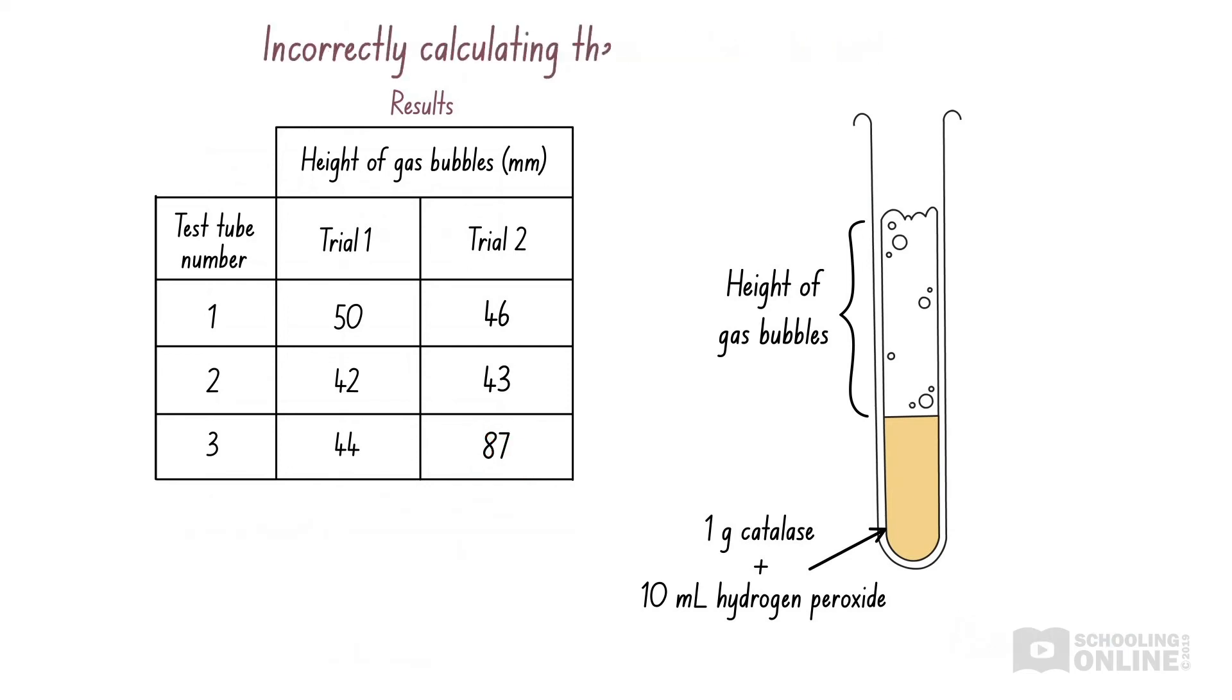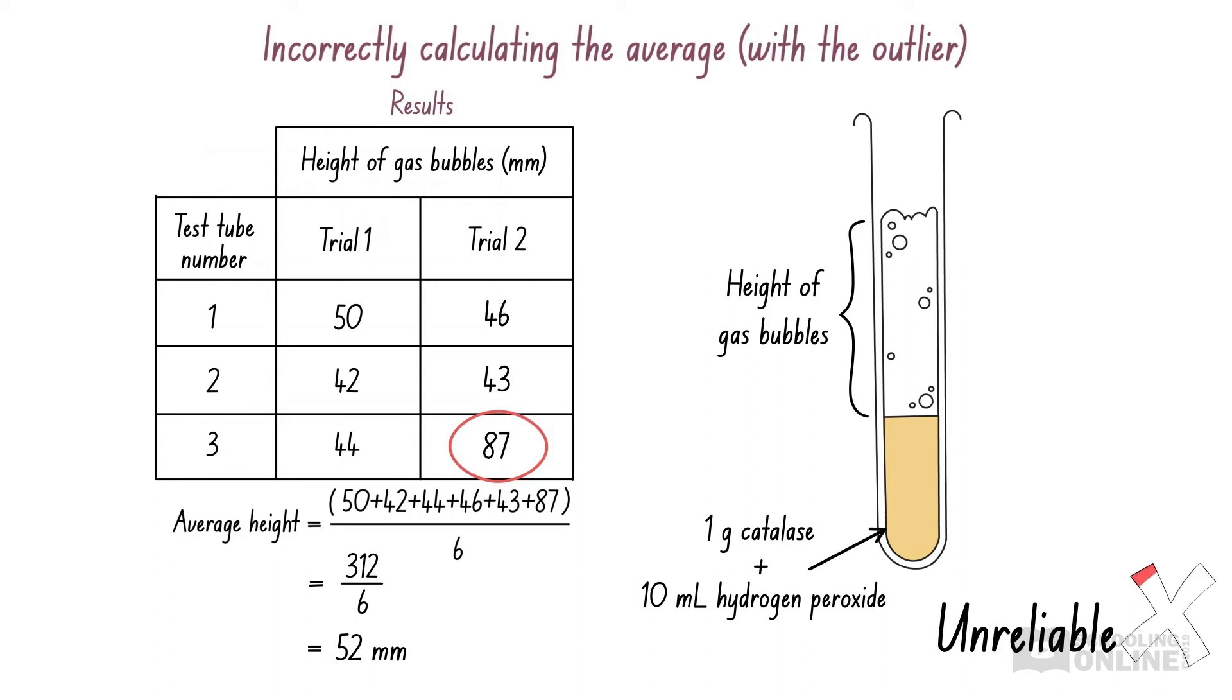Now, what would happen if we were to include the outlier when calculating the average? This would give us a result of 52 millimetres, which doesn't match up with most of the measurements that we've taken, and is too large. Therefore, it is important that we exclude outliers when calculating the average.